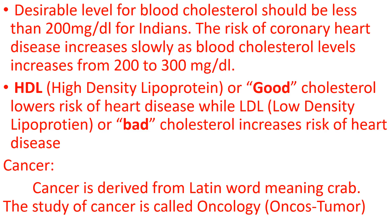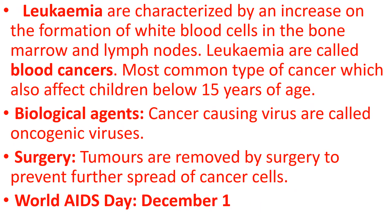Oncus means tumor. Leukemia is characterized by an increase in the formation of white blood cells in the bone marrow and lymph nodes. Leukemia is called blood cancer and is the most common type of cancer, also affecting children below 15 years of age. Cancer-causing viruses are called oncogenic viruses.